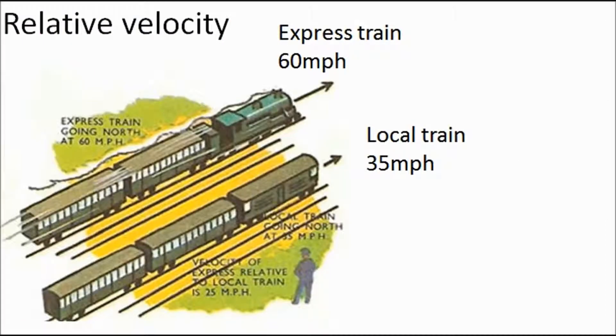Let's talk about relative velocity. So here, we've got a man standing here looking at these two trains. We've got an express train doing 60 miles per hour in this direction, and the local train doing 35 miles per hour in the same direction on a parallel track. So this guy here sees this one doing 60 miles per hour, and this one doing 35 miles per hour. But here's my question. If you were on this train, and the express train overtook you, how fast would the express train look to you?